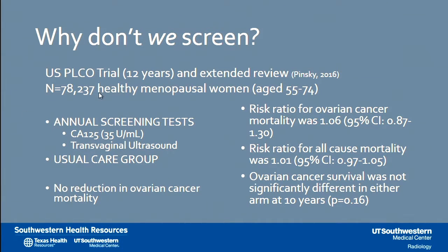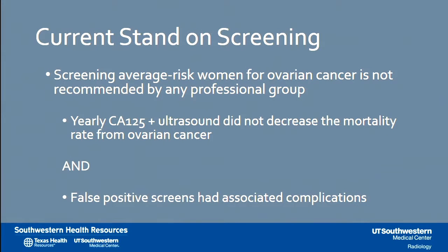Why don't we screen? The PLCO trial in the United States found that the risk of ovarian cancer mortality was 1.06 — survival was not significantly different in either arm at 10 years, with no reduction in ovarian cancer mortality. The usual care group just had doctor visits rather than annual screening with CA-125 or transvaginal ultrasound. Our current stand on screening for average-risk persons is not advocated in the United States because CA-125 is so nonspecific, ultrasound did not decrease mortality, and false positive screens had associated surgical complications.